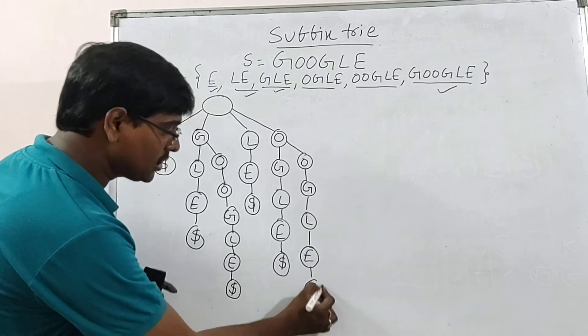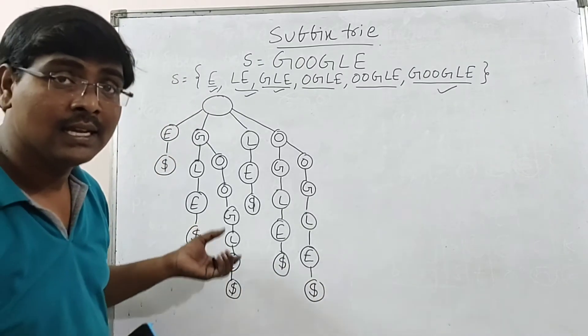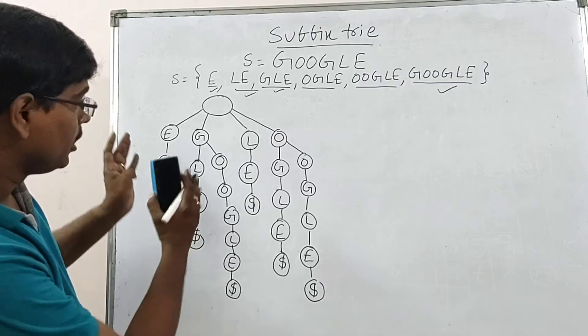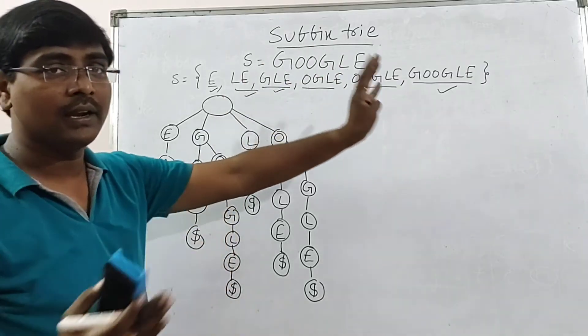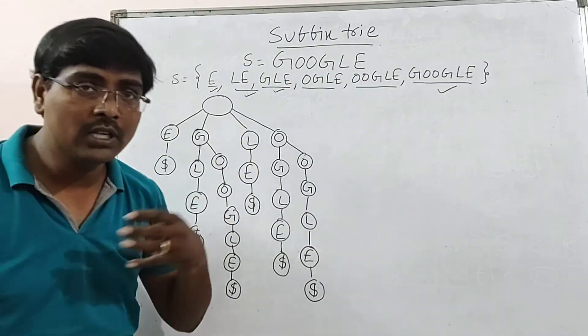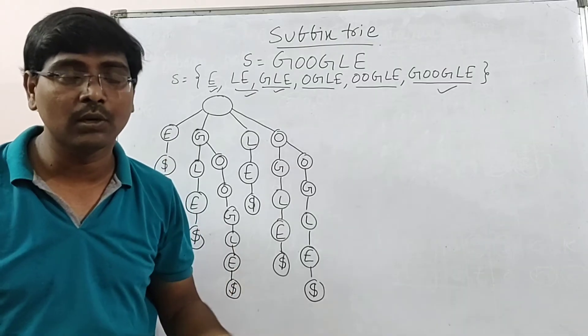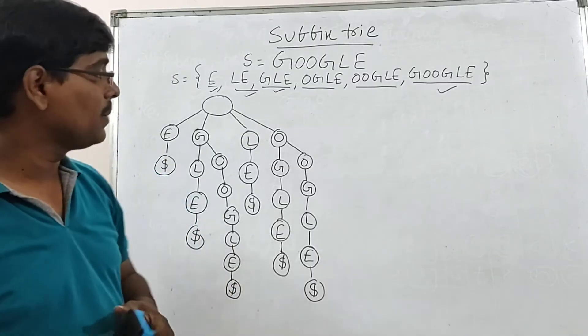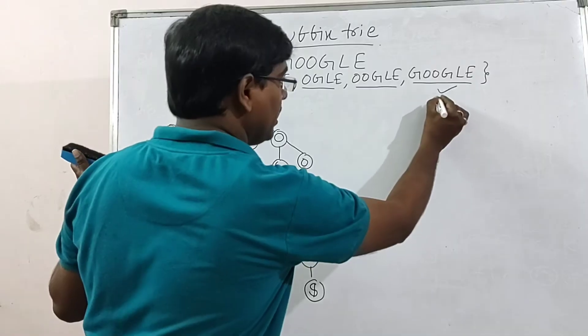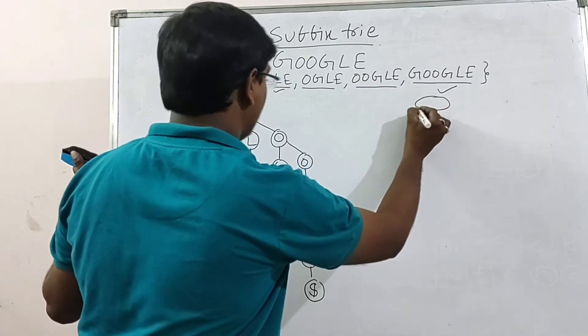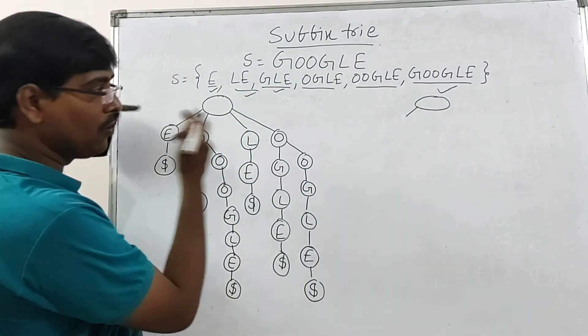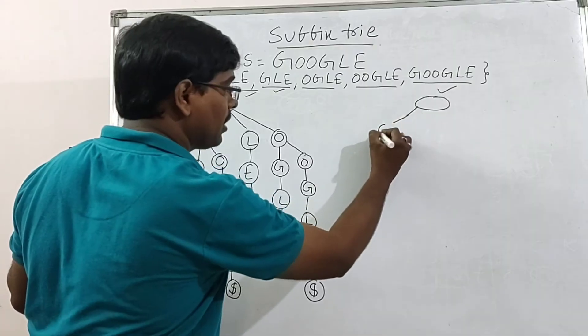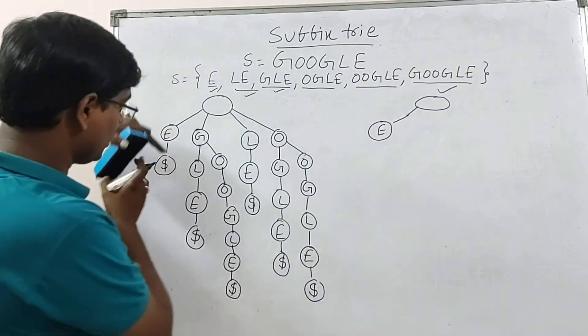This is the standard trie. Now, you need to convert the standard trie into compressed trie. Always we are preferred to use compressed trie. Why? Space optimization. Suppose I will redraw the diagram once again. Now, here for this only one letter. There is no possibility of compression. That is okay.